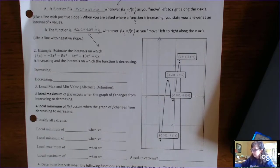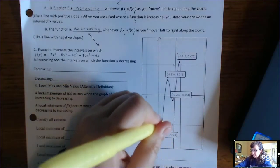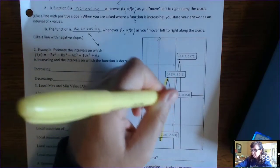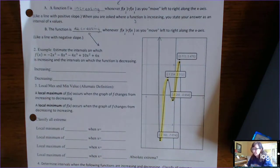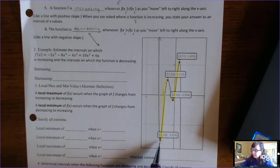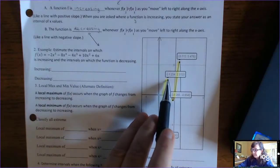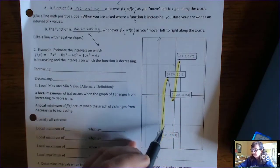With the yellow highlighter, I'm going to find the places where the function is increasing. From left to right, the function is going up here — this is where the function is increasing. Now we want to focus on the x-values that are making those y-values do that. We want to find the local min and local max, which I've already found here, and the x-values making the function do that.